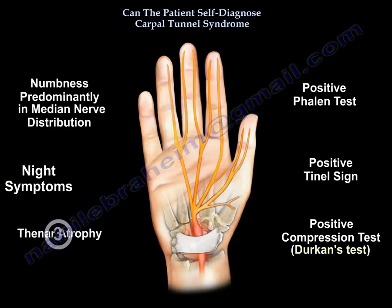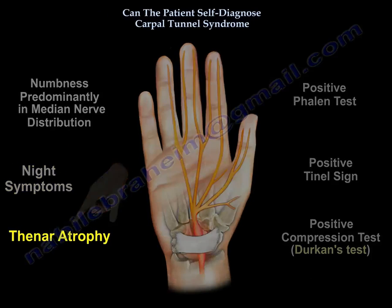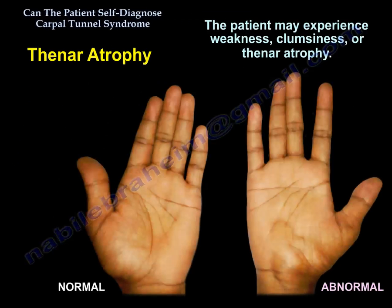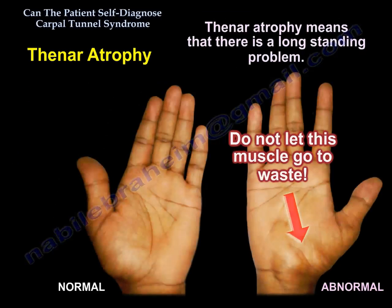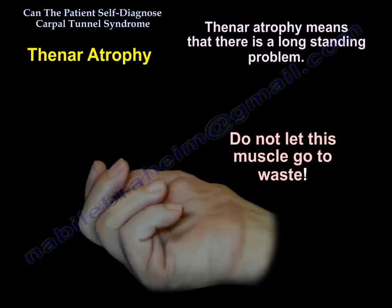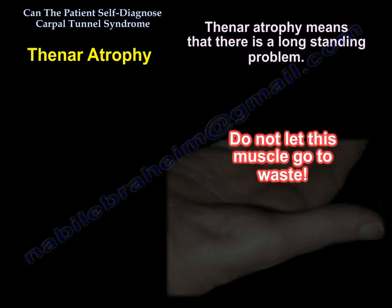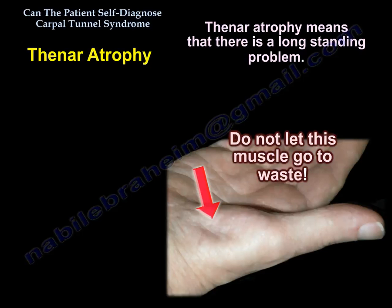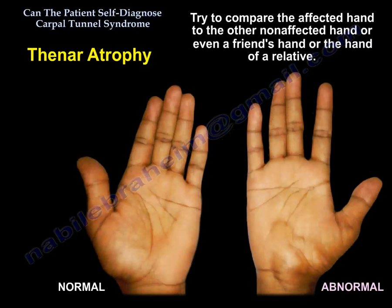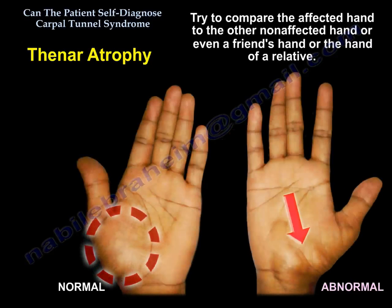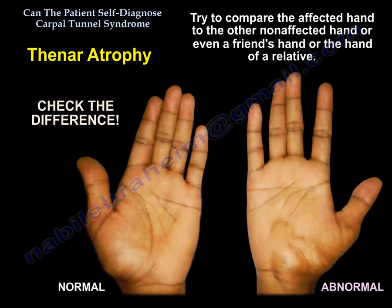Another clinical presentation is thenar atrophy. The patient may experience weakness, clumsiness, or thenar atrophy. When you see thenar atrophy, it means it is a long-standing problem — don't let this muscle go to waste. Try to compare the affected hand to the other unaffected hand, or compare it to the hand of a friend or relative, and check the difference.